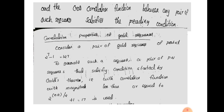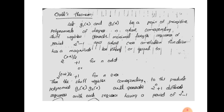The Gold codes use PN sequences whose cross-correlation properties are bounded as shown. This confirms the superior cross-correlation properties of Gold codes compared to using plain PN sequences. Thank you.